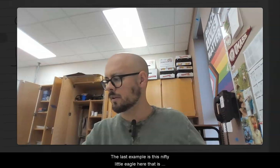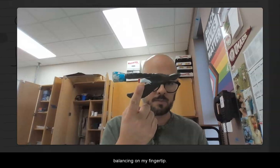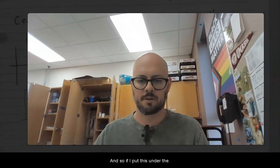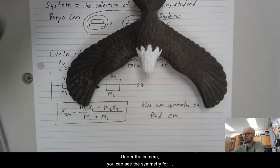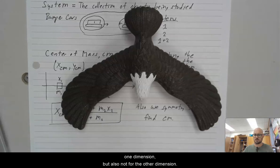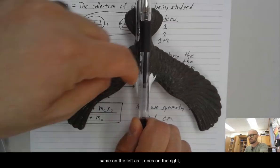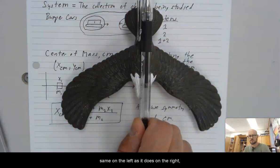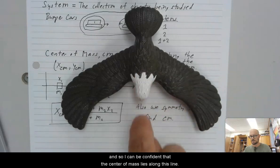The last example is this nifty little eagle here that is balancing on my fingertip. And so if I put this under the camera, you can see the symmetry for one dimension, but also not for the other dimension. Okay, so this eagle is symmetrical from left to right, right? If I drew a line here, the eagle looks exactly the same on the left as it does on the right.